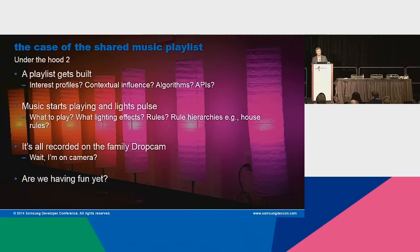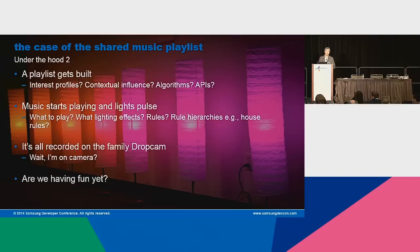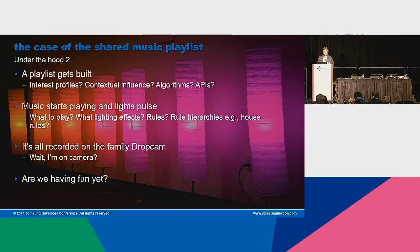Finally, the music started playing and the lights are pulsing. So what lighting effects? How did the lights know? Are there rules that govern how the lights and the music interact? There probably have to be something — like, when rock and roll plays, match the beat. But these are independent devices from independent companies. Who wrote those rules? Are there hierarchies of rules? There's a smart room with a music player, but are there also smart house rules? Does the house say no loud music after 10 p.m., and how does that factor in?